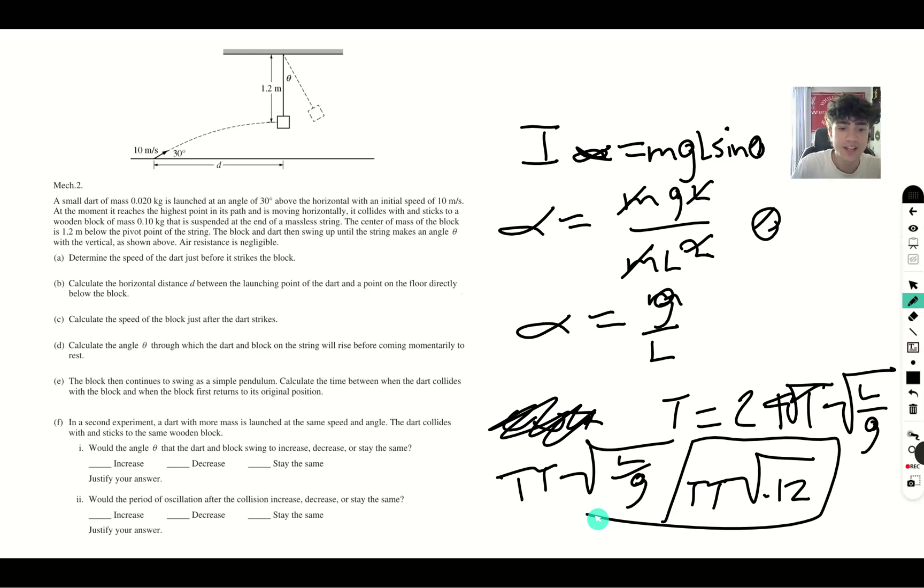In a second experiment, a dart with more mass is launched at the same speed and same angle. Would the angle increase? Yes, it would increase because there's more momentum. When there's more momentum before the collision, there's going to be more momentum after the collision. And when there's more momentum, more velocity, it's going to swing even further up, meaning that the angle theta is going to increase. But the time of oscillation is going to stay the same. Because as we saw here, it had to do with length and gravity, and it did not have to do with mass. So therefore, that will not play a factor.